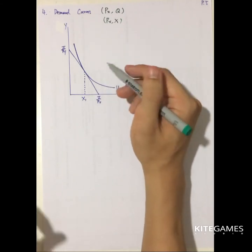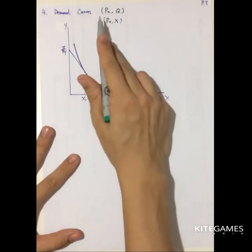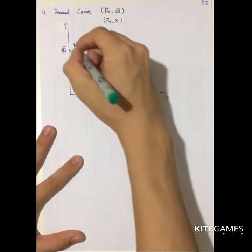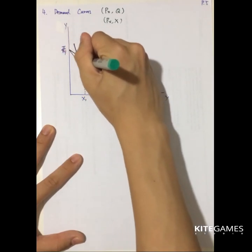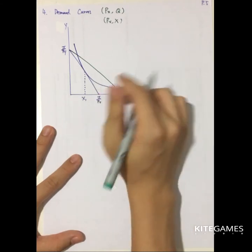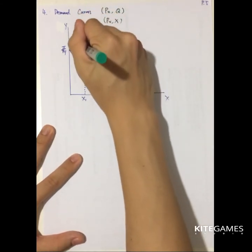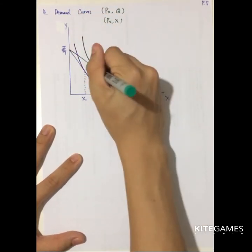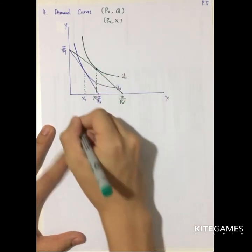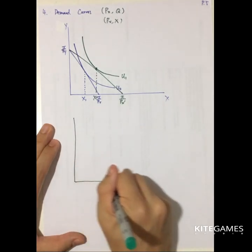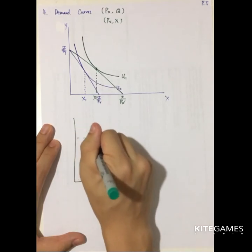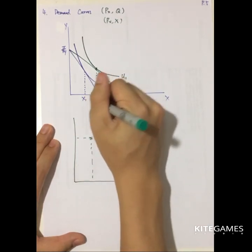We assume the Hicksian demand curve, the Hicksian demand function. If the price of X decreases, you can see that the budget line will rotate to the right. Then you draw a new indifference curve. You can see that when the price is lower, the optimal X increases.